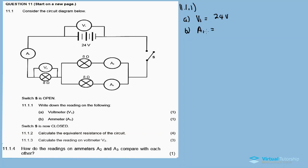(b) A1, which is the ammeter reading for the whole circuit. When the switch is open, there's no current flowing, so A1 is equal to zero amperes.